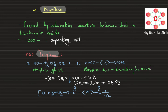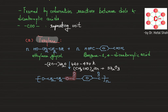They undergo condensation with loss of water — hydrogen is lost here and OH is lost here — and an ester is formed. The repeating unit is the ester linkage, and this polymer is what we call terylene.